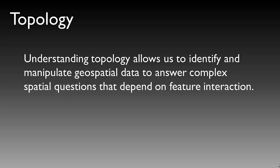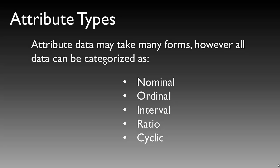Moving on to discuss attribute types: we've discussed different types of data models including points, lines, and polygons within our vector data models, and also our continuous and discrete raster data sets. When speaking of GIS data, attribute data really is the power behind the GIS. The spatial data and geometry we've discussed previously is very important; however, the describing variables or attributes are the information behind those spatial elements that really give it context.